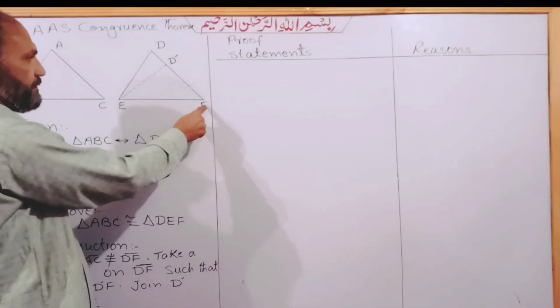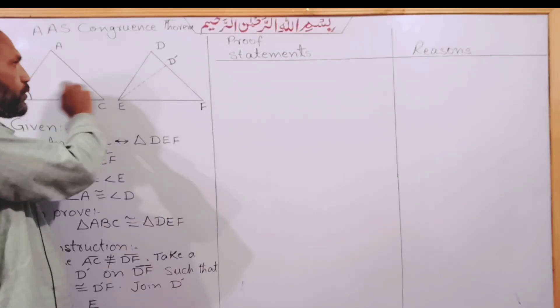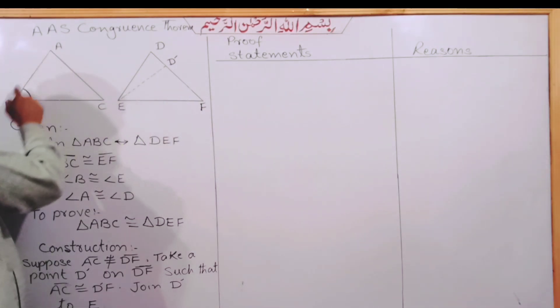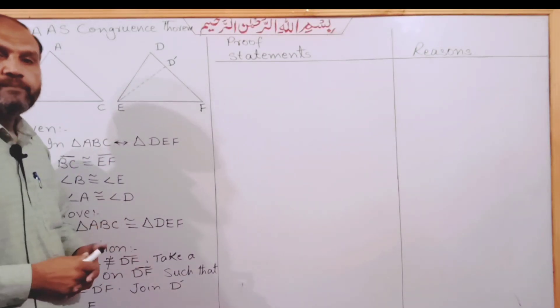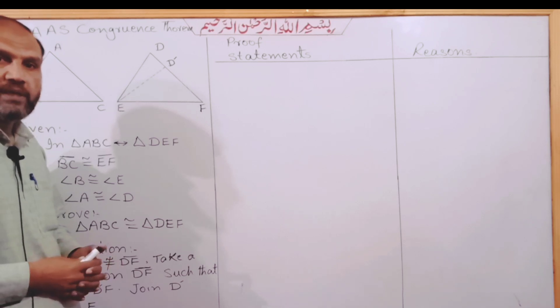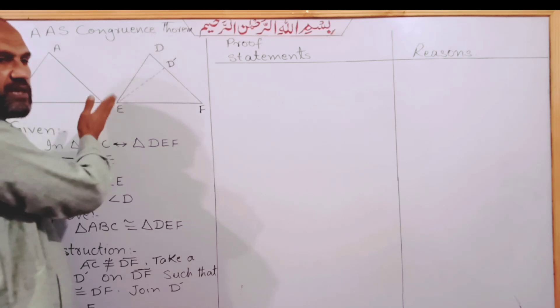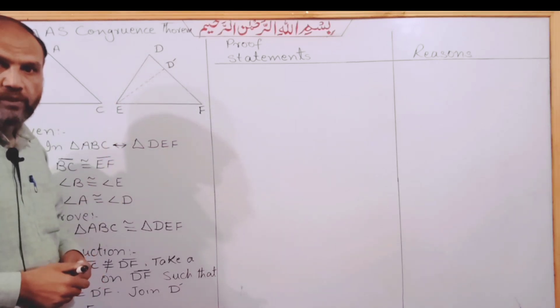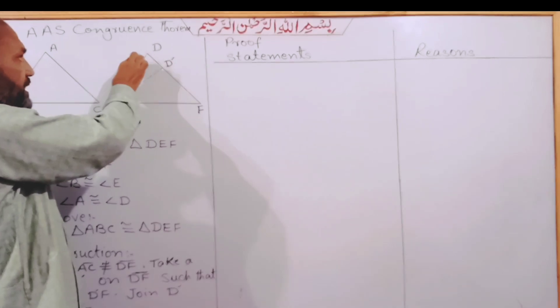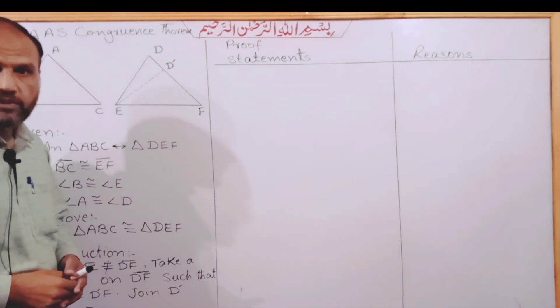The approach to proving the theorem is as follows: first, we consider triangle D-prime EF. We will show it is congruent to triangle ABC. Since D-prime F is congruent to AC by construction, and angle B is congruent to angle D-prime EF, we apply SAS. This gives us that D-prime E and DE are congruent, and D-prime F and AC are congruent.